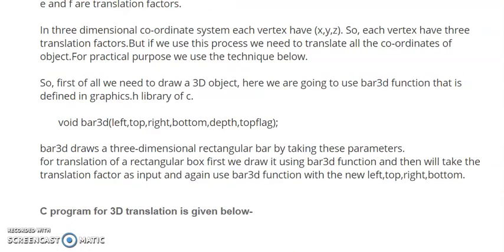As discussed in theory, in 3D transformation we have to consider three axes: X, Y, and Z. Then we will see the techniques or the coding to implement it. So first of all we need to draw a 3D object. How can we draw the 3D object?